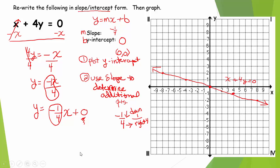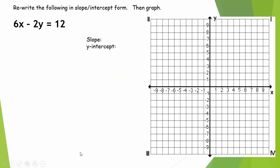Let's try the next one. Again, I need you to graph in slope-intercept form. If it's given in a different form — standard form — you need to rewrite it as y equals mx plus b. Our slope is m, and b is the y-coordinate for our y-intercept. The first thing I need to do is isolate y.